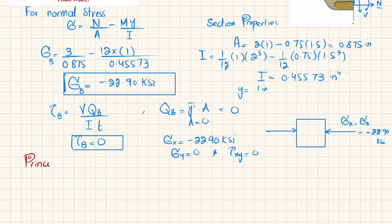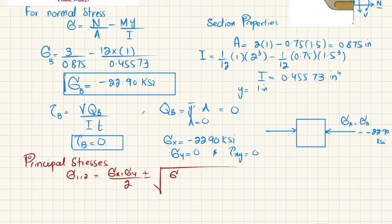For principal stresses, we can use Mohr's circle or the formula: sigma_1,2 equals (sigma_x plus sigma_y) divided by 2, plus or minus the square root of [(sigma_x minus sigma_y) divided by 2]² plus tau_xy². I solved problem 9-26 using both methods; here I will use the formula.